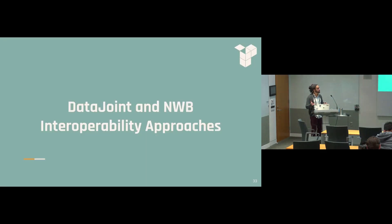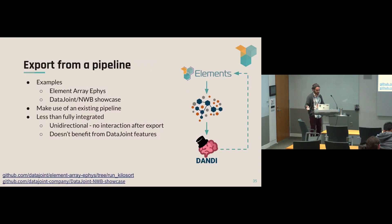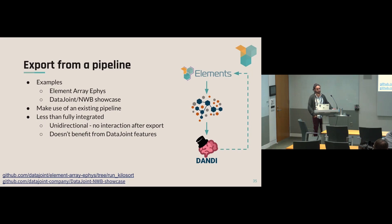If you're interested in integrating NWB and DataJoint differently, this direct export isn't the only approach. The benefit of direct export is that you can make use of an existing pipeline — many people already using Element Array Ephys gain the ability to export to NWB. The closed loop piece we hope to add in the future would make it a more circular relationship to reanalyze files. However, by exporting you don't necessarily gain all the data integrity maintenance features that keeping data within the pipeline would provide.